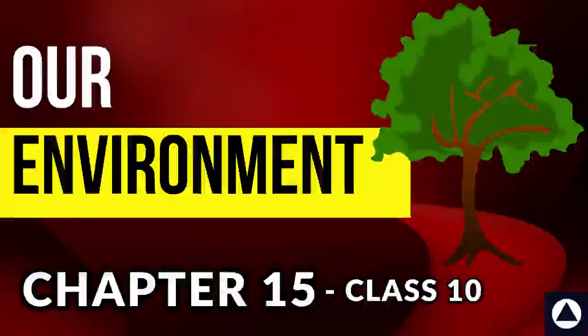It has been found that green plants in a terrestrial ecosystem capture about 1% of the energy of sunlight that falls on their leaves and convert it into food energy. When green plants are eaten by primary consumers, a great deal of energy is lost as heat to the environment, some goes into digestion and doing work, and the rest goes towards growth and reproduction. An average of 10% of the food eaten is turned into body mass and made available for the next level of consumers. Since so little energy is available for the next level, food chains generally consist of only 3 or 4 steps.